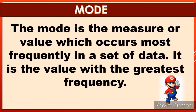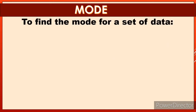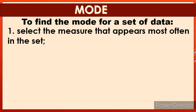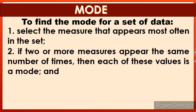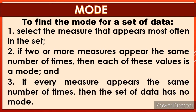Now let's move on to the third one, which is finding the mode. The mode is the measure or value which occurs most frequently in a set of data. It is the value with the greatest frequency. To find the mode: first, select the measure that appears most often in the set. Second, if two or more measures appear the same number of times, then each of these values is a mode. Third, if every measure appears the same number of times, then the set of data has no mode.